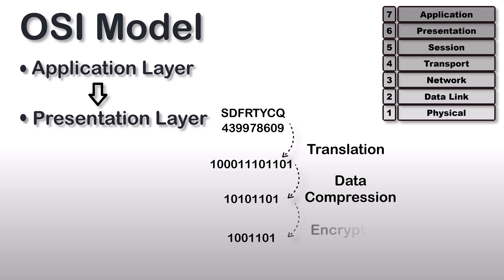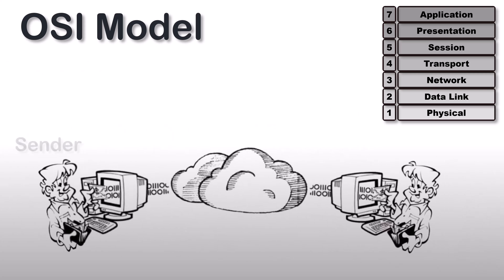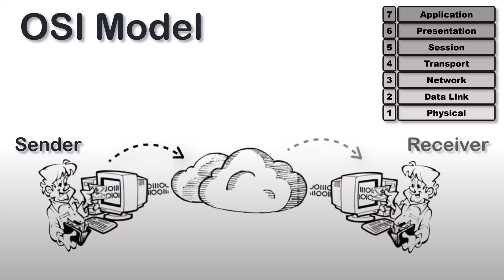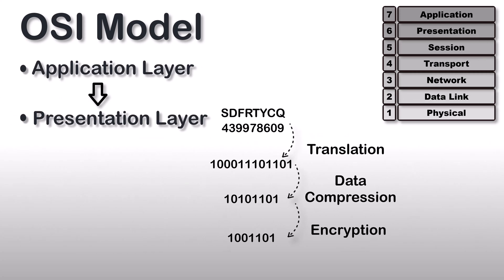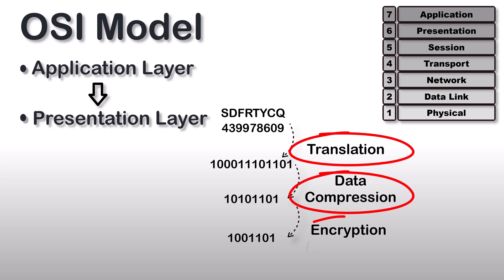Also, to maintain the security of data before transmission, data is encrypted, and this encryption increases the security of the original data. On the sender side, data is encrypted, and on the receiver side, data is decrypted. SSL, or Secure Socket Layer protocol, is used in the presentation layer for encryption and decryption of data. So the presentation layer performs three basic functions: translation, compression, and encryption/decryption of data.